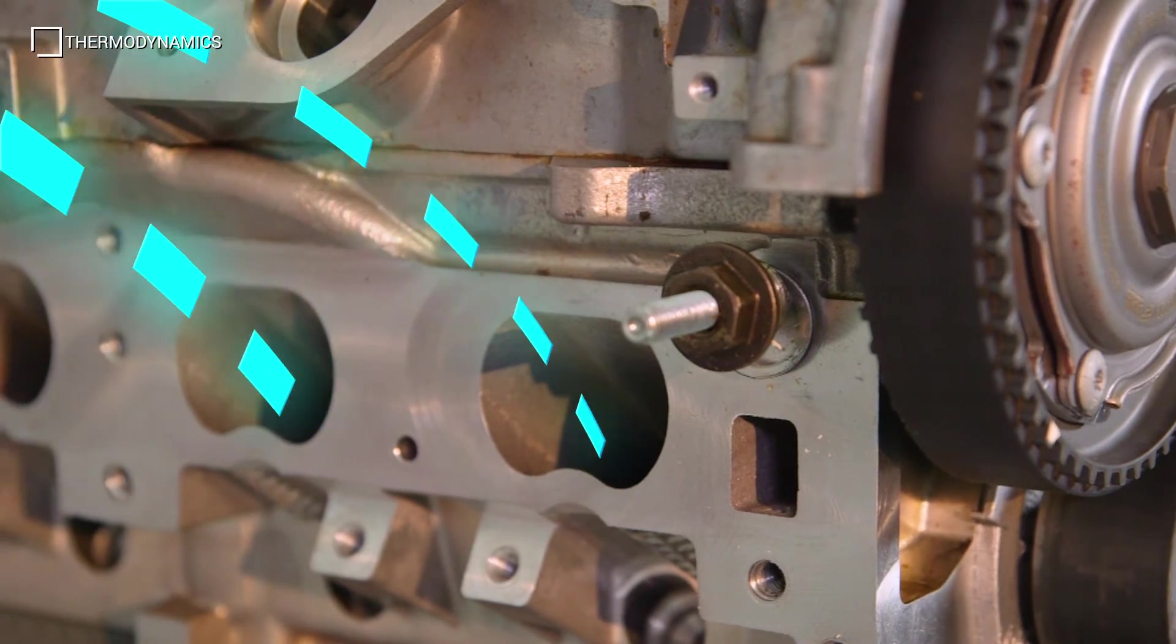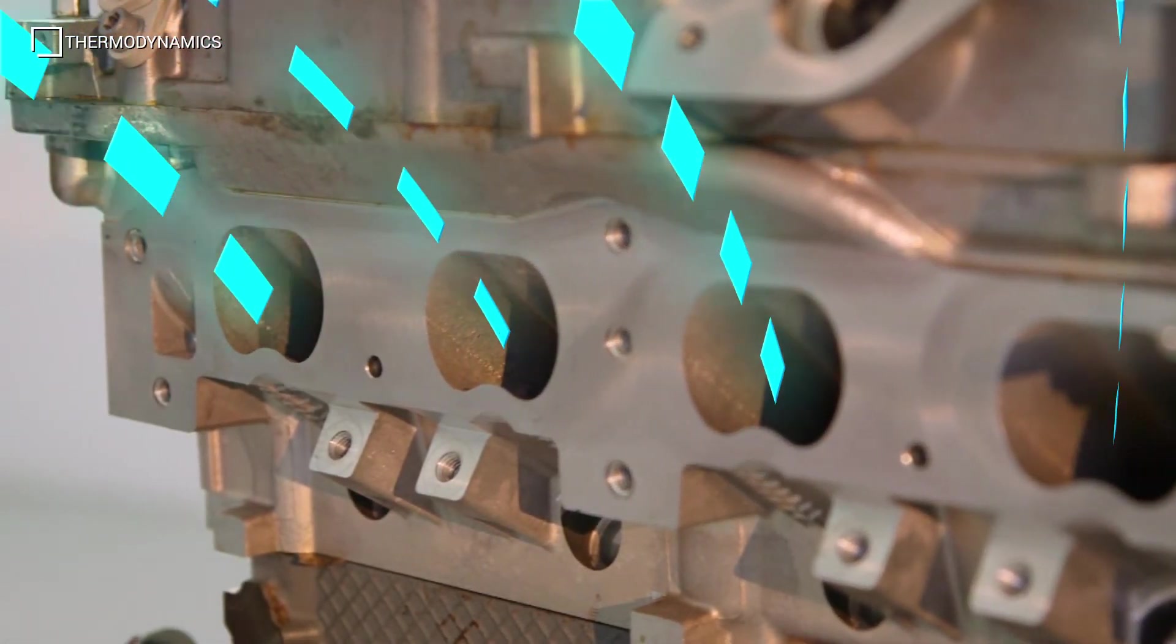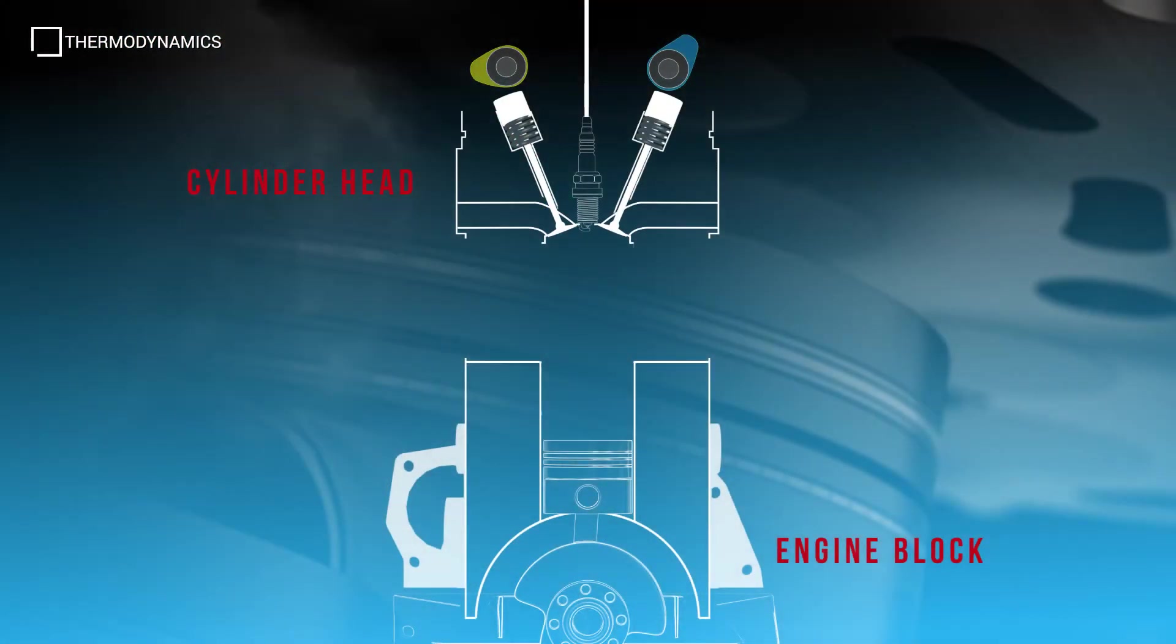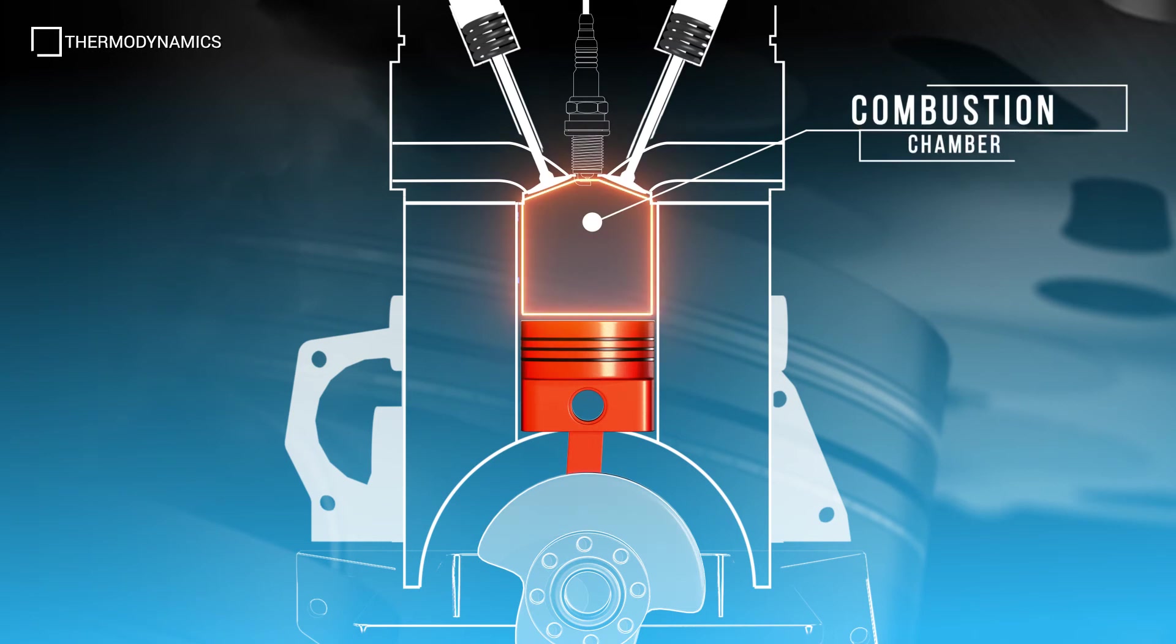The upper assembly, or cylinder head and valve train, controls the flow of fuel and air into the combustion chamber. The cylinder head is attached to the lower engine assembly and forms a combustion chamber and cylinder for the piston to operate in.